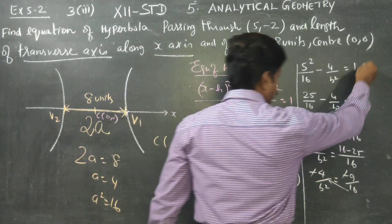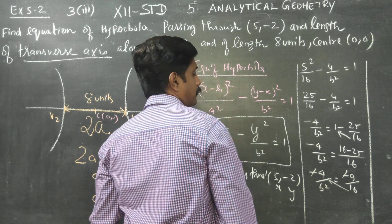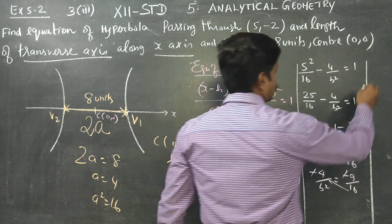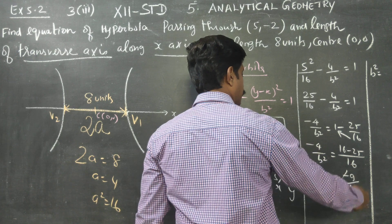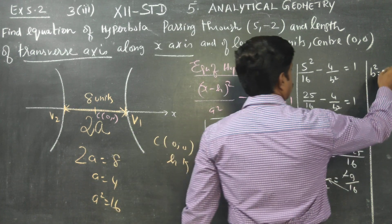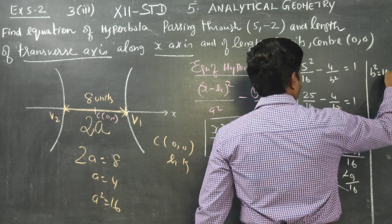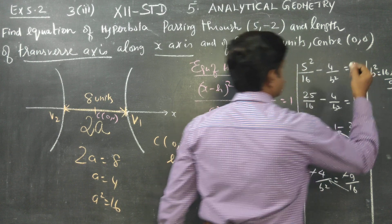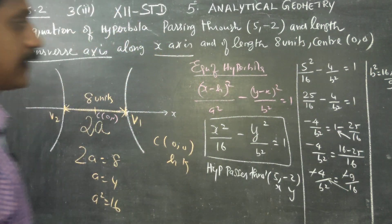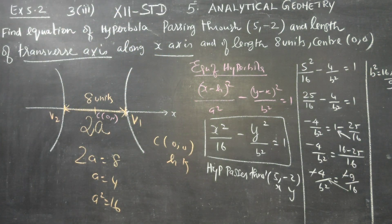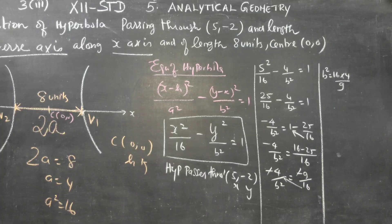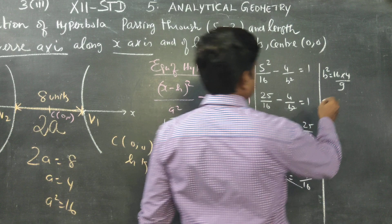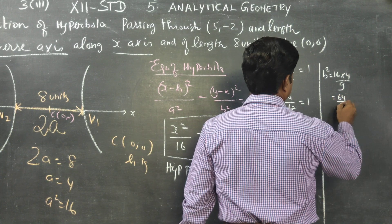Solving for b²: b² equals 16 × 4 / 9, which gives b² equals 64/9.